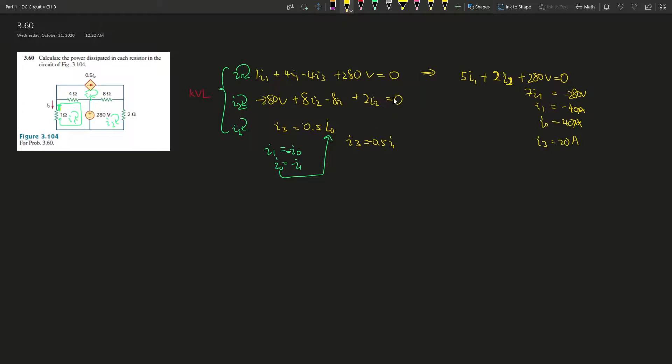If we expand on this one, this is 8 and 2I2, so that's 10I2 minus 8 times I3. What is 8 times I3?